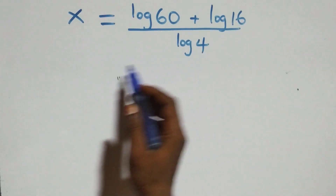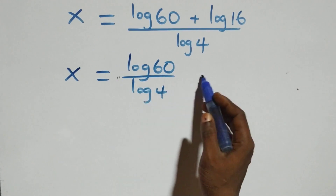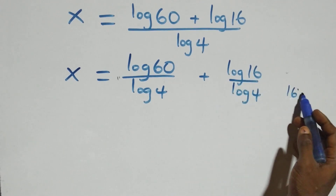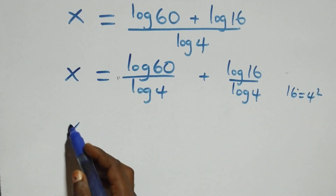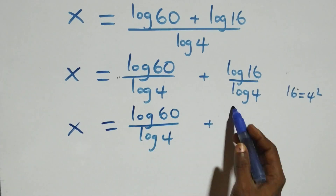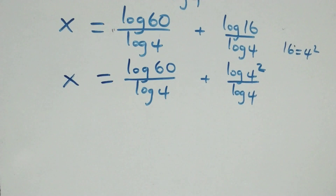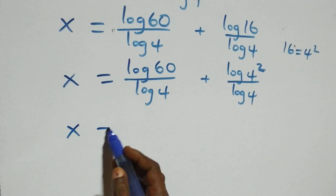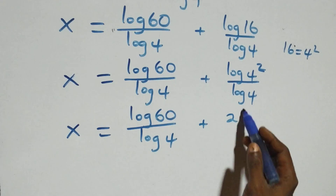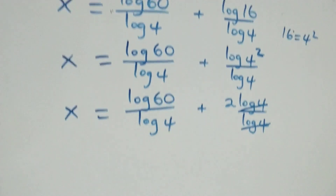Then the next step: we separate this into two fractions, giving x equals log sixty over log four plus log sixteen over log four. We can express log sixteen as log four squared, which equals two log four. So log four squared over log four gives two log four over log four, and log four cancels — we have two left.